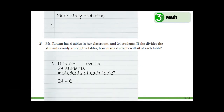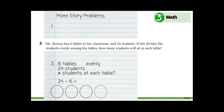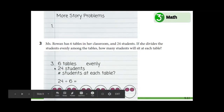Let's draw a model to help us. We said that there are six tables, so let's go ahead and draw six loops for six tables. Then there are 24 students, and we need to divide these students into the six tables. We could put one student at a table at a time, but let's put two students at a table. Let's draw two circles in each loop and see how many we have after that. So we have two students, four, six, eight, ten, twelve. But we said there are 24 students total, and so far we've only put 12 students at tables.